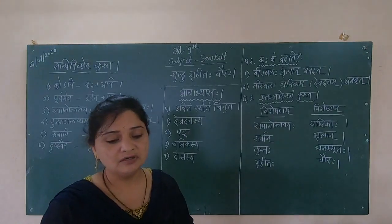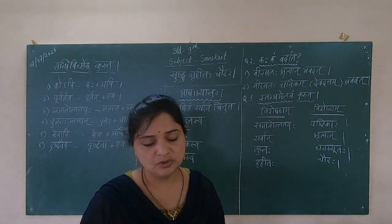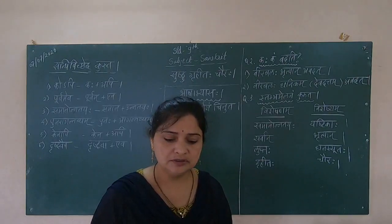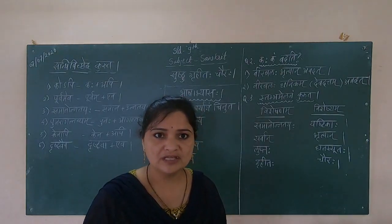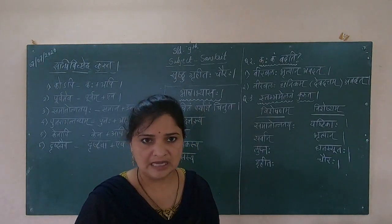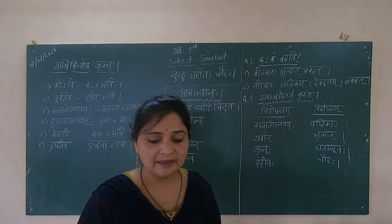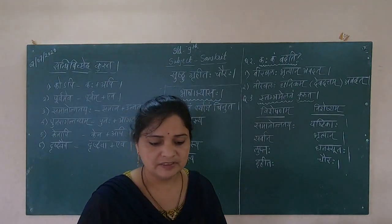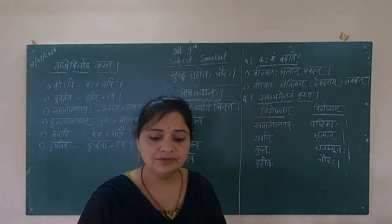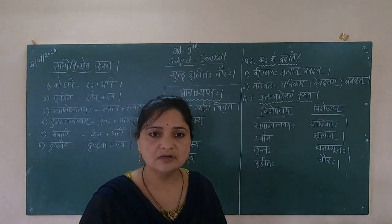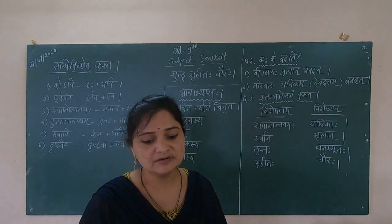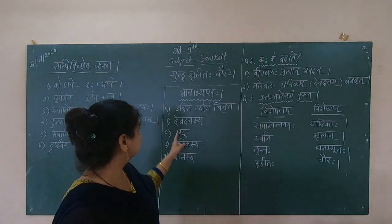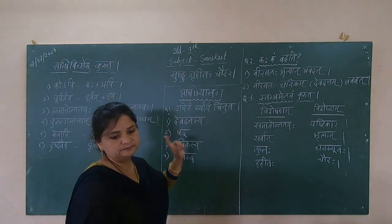Question number one: Uchitam pariyayam chinu. Kasyya dhanasiyutoh lupthoh — whose bag was stolen? Options: devadattasya, veerbalasya, vrutyasya, nupasya. The answer is devadattasya — Devadatta's bag was stolen.